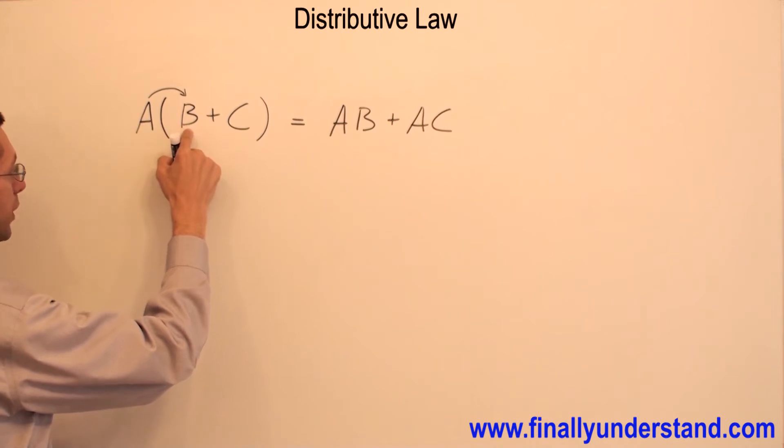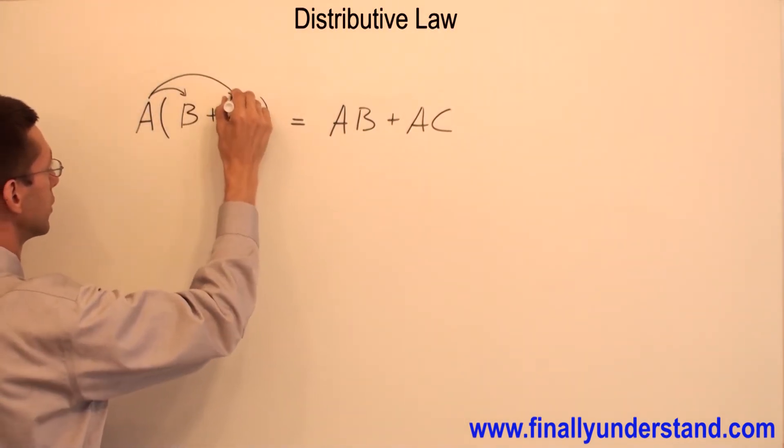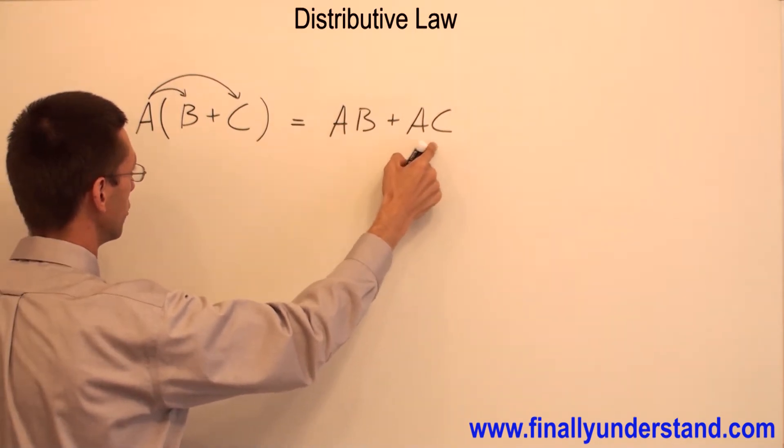So A times B is going to give me AB. A times C is going to give me AC.